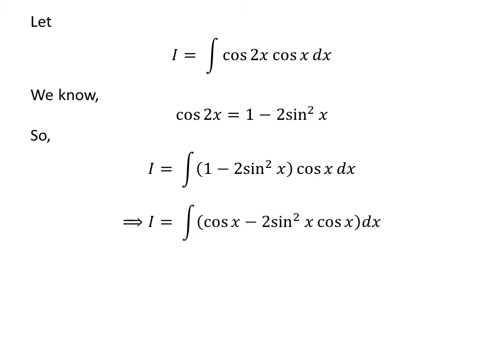State multiplication gives us I is equal to the integral of cosine of x minus 2 times sine squared of x times cosine of x, with respect to x. Here, I have applied the linearity property of the integral.